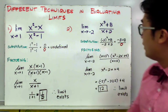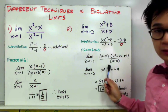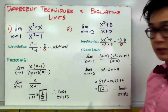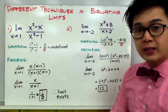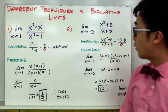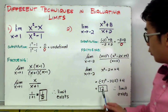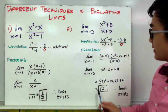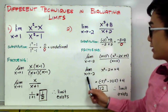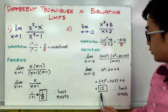We can now cancel x plus 2 from the numerator and denominator, leaving x squared minus 2x plus 4. By direct substitution, substituting negative 2 gives us a limit of positive 12.